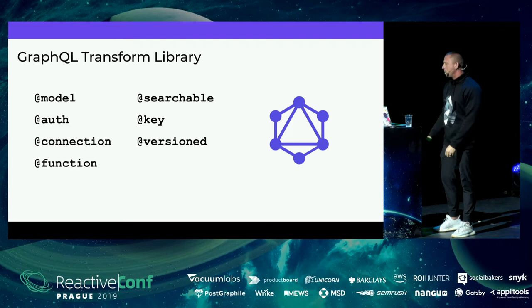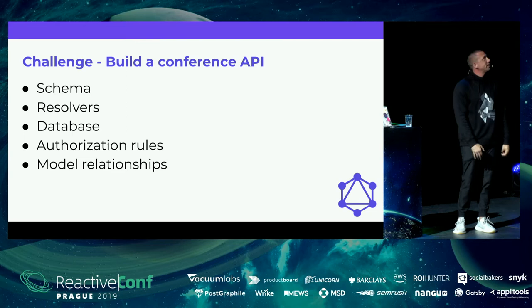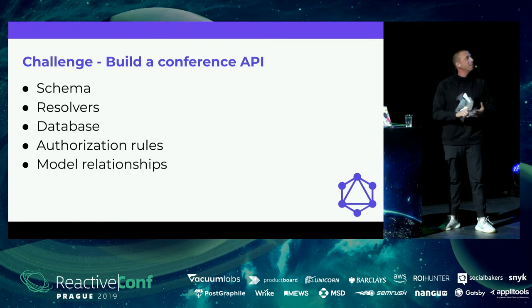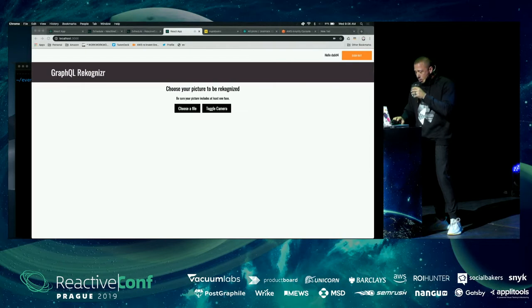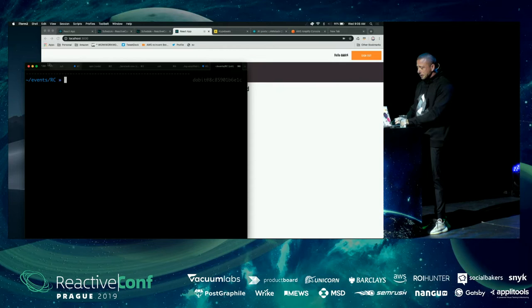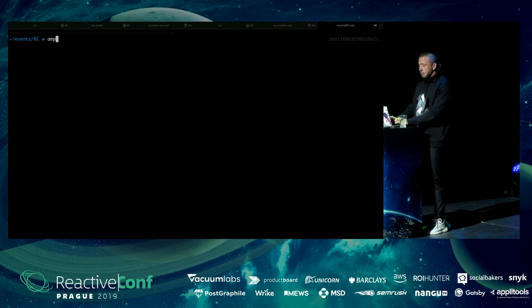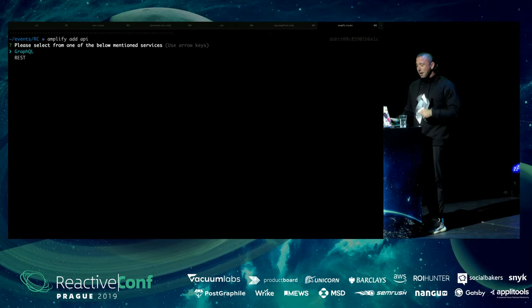The challenge I've set for myself is to build a conference API for ReactiveConf in five minutes. That means we need a schema, resolvers, a database, authorization rules, and modeled relationships between the data — and we want to test it out locally as well. I'm starting off with an Amplify project and I'm going to go ahead and add the API. To add an API you run 'amplify add api' and choose between GraphQL and REST.